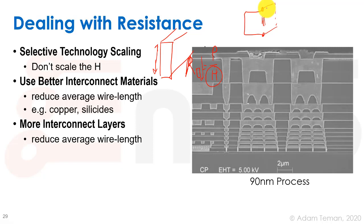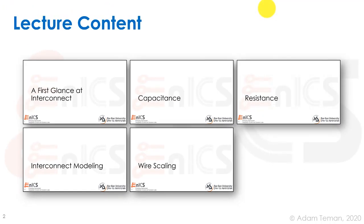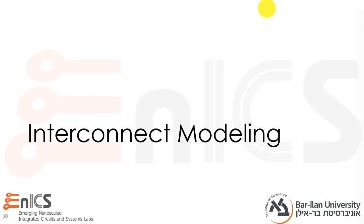Fourth, we should minimize contact resistance. Using single-layer routing avoids the serial resistance added by contacts. When we do have to change layers, using more contacts in parallel is better. That covers the short part on resistance, and now let's go into the modeling of interconnect.